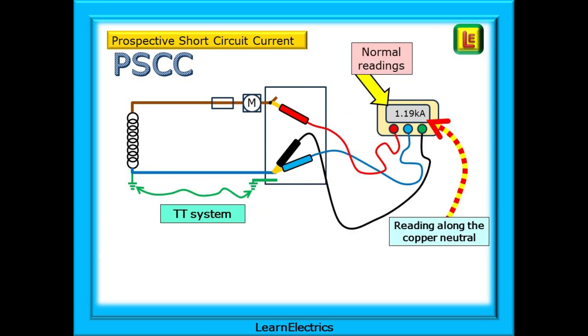As you would expect the same settings are used for TT systems but this is TT with a high impedance to earth. Then how come the PSCC reading looks normal, about the same amps as the TNCS and TNS systems? Why was PFC just 3 amps and now PSCC is 1190 amps? This is because the neutral is a copper cable all the way back to the transformer. It is not relying on an earth connection. It is not using the soil. So we should expect readings anywhere from a few hundred amps up to one kiloamp or more.